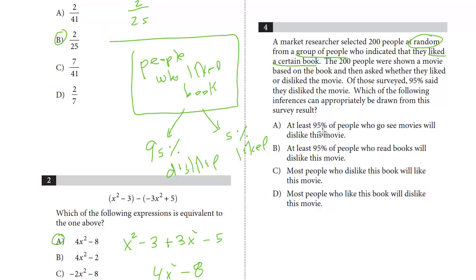At least 95% of people who see movies, that is not people who like the book. You could just stop reading here. You can never make an inference about any other group than the one sample. That is wrong. At least 95% of people who read books, people who read books is not the same as people who like this book. It's not the same group. Can't make any conclusion.